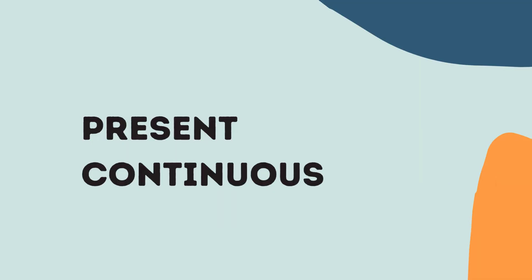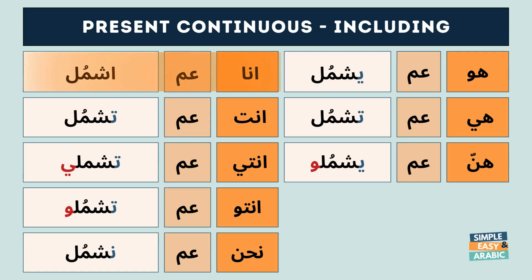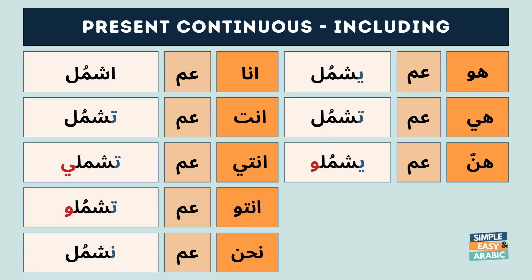This is the present continuous: أنا عم إشمل، أنت عم تشمل، أنت عم تشملي، أنتو عم تشملو، نحن عم نشمل، هو عم يشمل، هي عم تشمل، هنن عم يشملو.